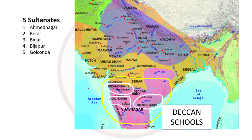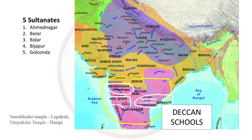In the Deccan region, there was also a very powerful Hindu dynasty called Sangama dynasty or Raya dynasty in Vijayanagar. This dynasty created two very important temples: Veerabhadra temple at Lepakshi and Veerupaksha temple at Hampi. We also see the influence of these temples and their art in Deccan miniatures.